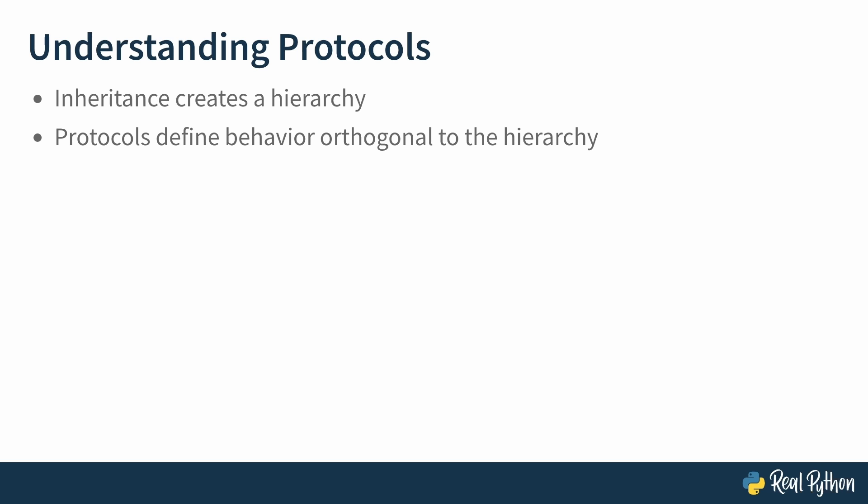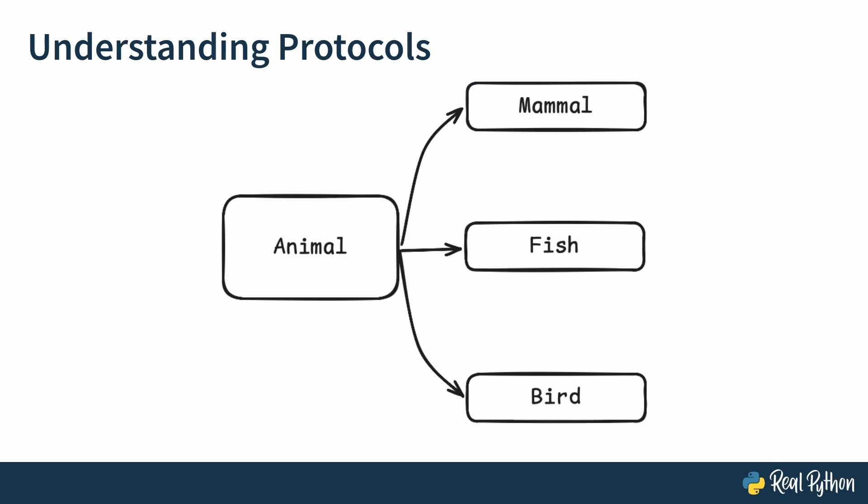The point of protocols is to define sets of behaviors that many different classes might exhibit and that are not necessarily tied to this hierarchy. But this is all very abstract. Let's show you an example, a concrete example. Imagine you're building a very complex simulation of ecosystems in planet Earth. And right now you're trying to model the animal kingdom. And you might think, well, you'll define a class animal that is going to be the parent class for all species of animals that exist.